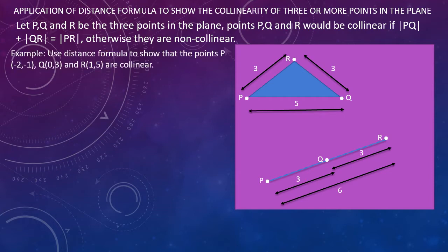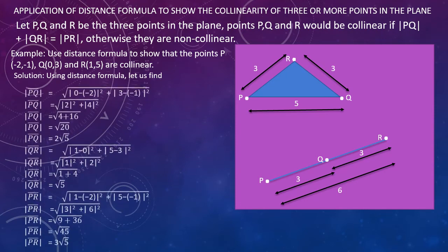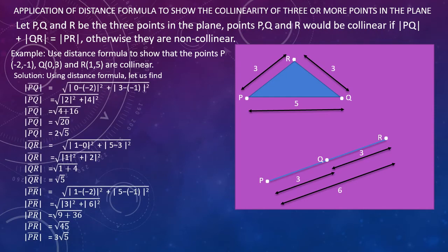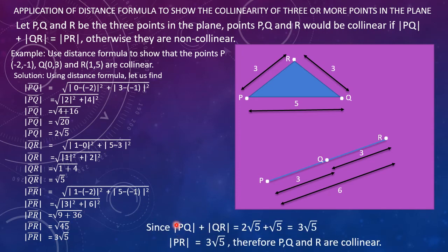Now let us solve an example. Use the distance formula to show that the points P, Q and R are collinear points. We have to find the distances PQ, QR and PR. The distance PQ is found as 2√5, the distance QR is √5, and the distance PR is 3√5. If we add PQ and QR: 2√5 plus √5 equals 3√5, and the third side PR is already 3√5. So the points P, Q and R are collinear points.